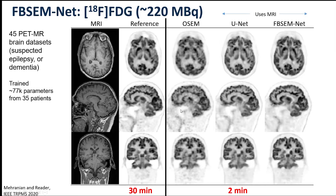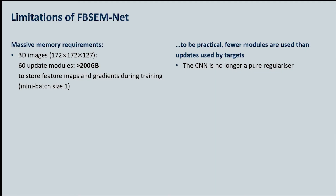Here is that methodology demonstrated with one unique architecture per module, with the same parameters shared across all updates — 77,000 parameters trained from 35 patients. Here's the high-quality reference data at 30 minutes, and FBSCMNet delivers a result from just two minutes of data, obviously superior to the standard EM reconstruction. There are problems with FBSCMNet though: if you want to train up many such modules — such as the 60 updates typically used clinically — you'll need about 200 gigabytes of memory to store all the feature maps and gradients for backpropagation during training. In practice, one often uses fewer CNN modules than the number of updates used to generate the targets, meaning the CNN ends up being an acceleration method as well as a regularizer, rather than a pure regularizer.